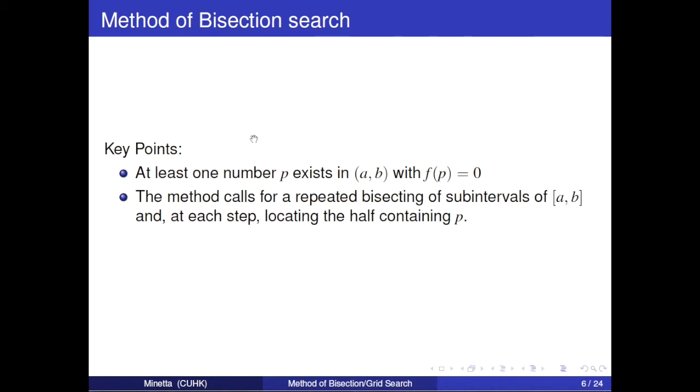You should bear in mind that there are two key points. First, at least one number p, which means sometimes, maybe there are more than one p. Last, the method calls for repeated bisecting of subintervals of [a, b]. And at each step, locating the half containing p.